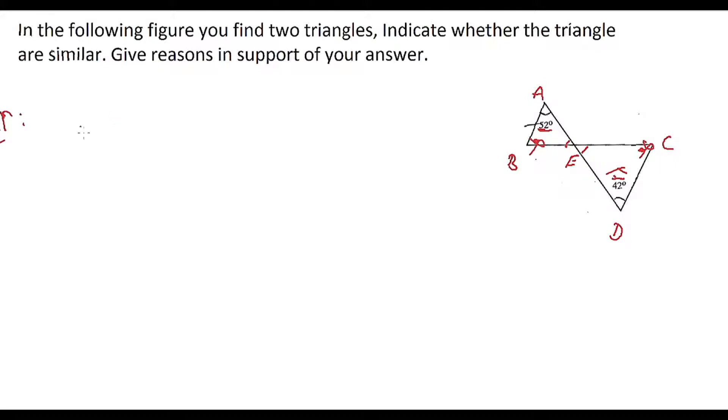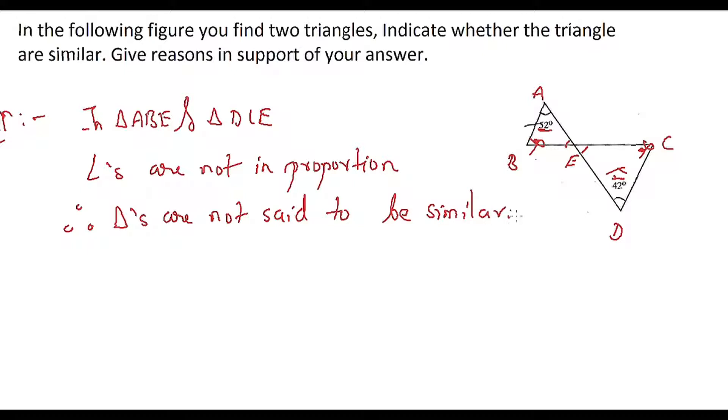In triangle ABE and triangle BCE, angles are not in proportion. Therefore, triangles are not set to be similar. There is no chance.